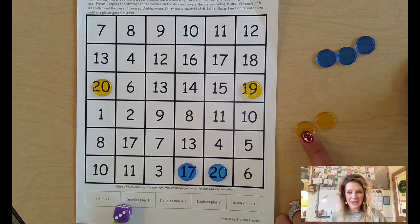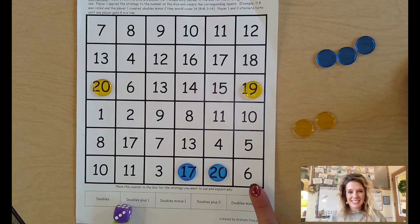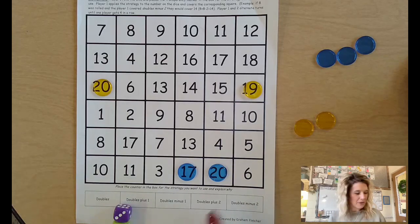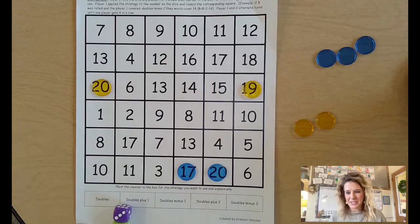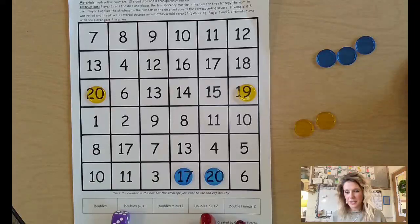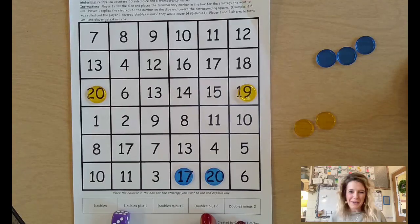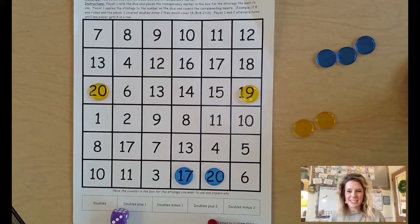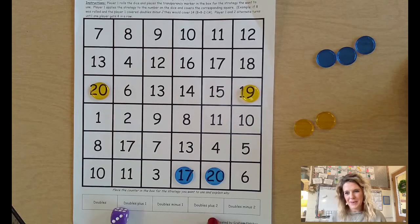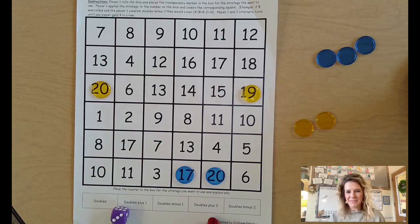Now player yellow might want to try to get six or three so that they can block whatever player blue is doing. There are directions on the top of this page, and if you have questions you can reach out to me. But I hope that you enjoy playing this game together. If you do have success with it, feel free to send me a message and let me know how it went. I look forward to hearing from you. Have a good day.